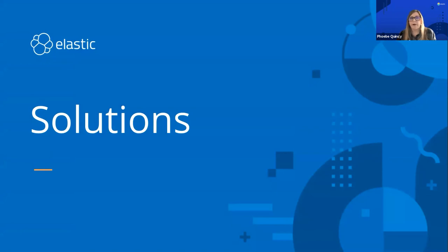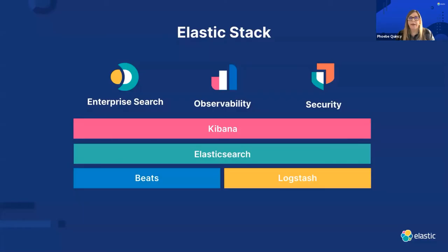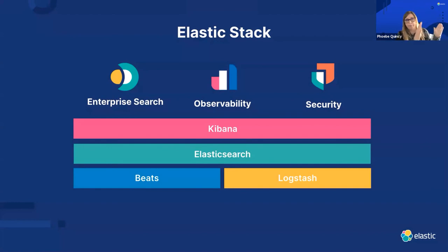All of these companies are essentially using that Swiss Army knife of Elastic to solve specific problems and specific challenges. Many of them fall under the same umbrella. Now that you have a sense of how Elastic is used under the hood, let's break out how we solve certain kinds of business problems. The Elastic stack — Beats, Logstash, Elasticsearch, and Kibana — helps solve problems under three different umbrellas: Search, Observability, and Security.